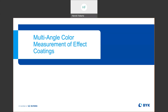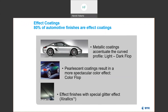The first topic is multi-angle color measurement of effect coatings. Something like 80% of automotive finishes are effect coatings — very, very common coatings, particularly in transportation such as automobiles, boats, and planes. They include metallic coatings, which are little bits of metallic flake that go into the paint. This serves to accentuate the curved profile of surfaces, and that's what we call light-dark flop — when the apparent lightness of the surface changes to our eye depending on our observation angle.